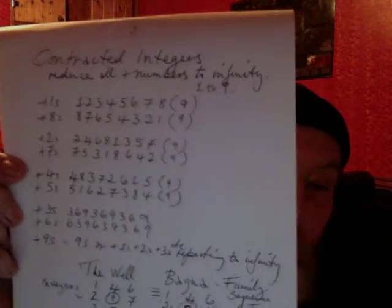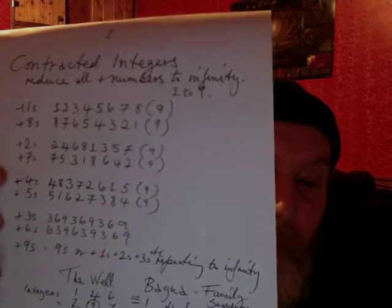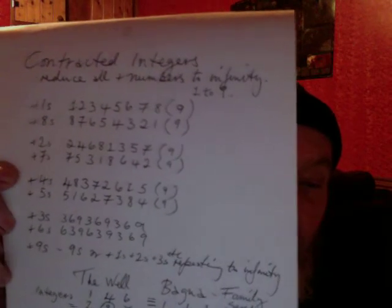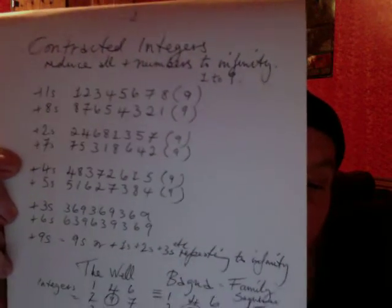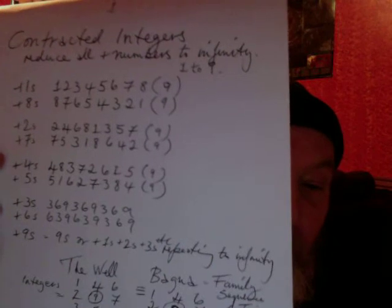4s and 5s are particularly important as they appear in the Lo Shu. And the contracted integrates here — you can see 1 and 8s, 2 to 7s, 4 to 5s, 3 to 6s, which all produce 9s.